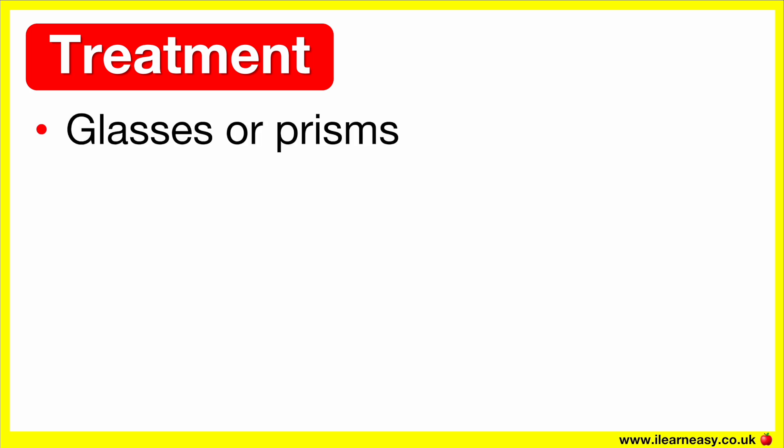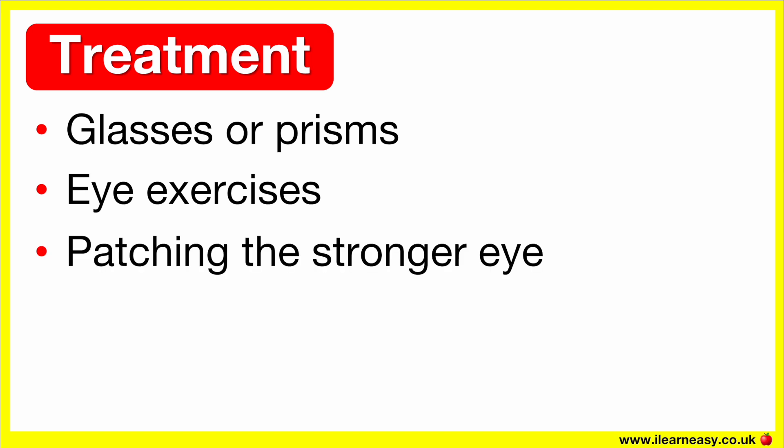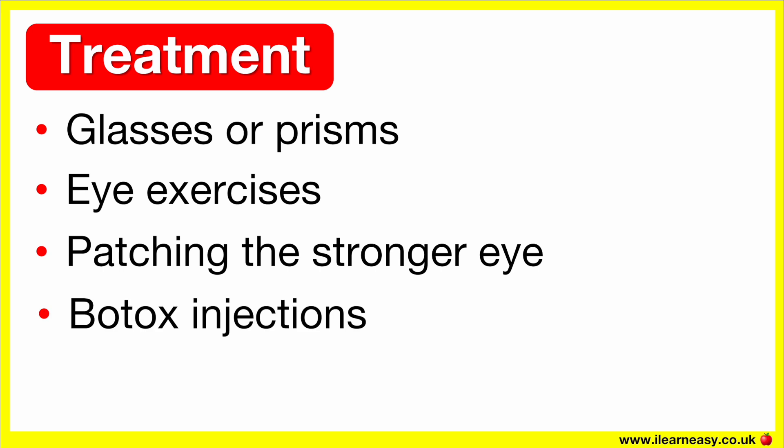The treatment options for a tropia depend on the age of the patient and the cause of the misalignment. Some treatment options include glasses or prisms to help align the vision, eye exercises known as vision therapy, patching the stronger eye to strengthen the weaker eye, Botox injections in some cases, and surgery on the eye muscles to align the eyes.